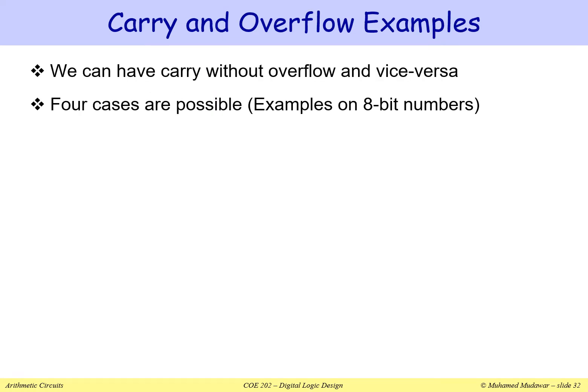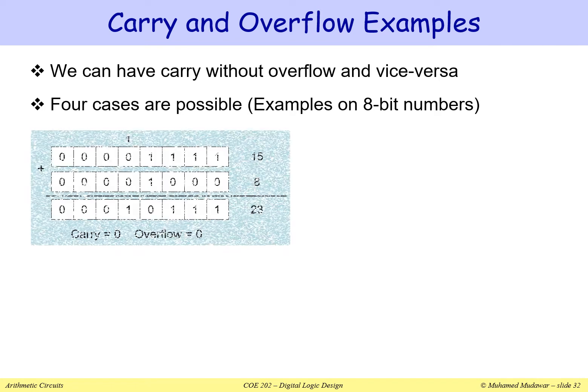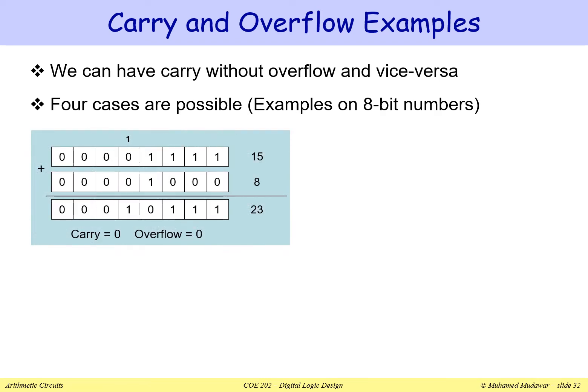Let us take a look at some examples to see how we can get carry and overflow. There are four cases: no carry and no overflow, carry but no overflow, no carry but overflow, or both carry and overflow. In the first case, I'm adding 15 plus 8, and the sum turns out to be 23. The addition is done in binary, and there is no final output carry and no overflow.